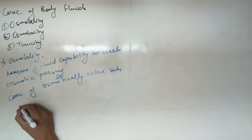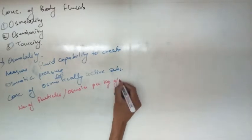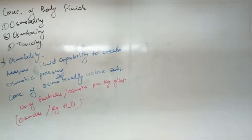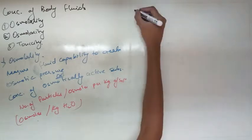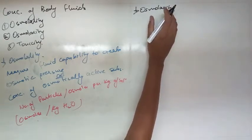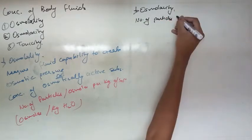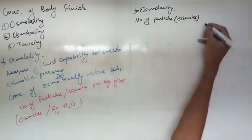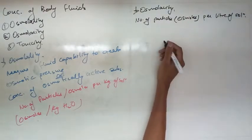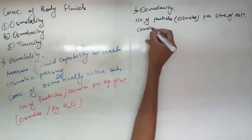Osmolarity is another term used to express osmotic concentration. It is the number of particles or osmoles per litre of solution — it is easier to understand than osmolality. Think of it like molarity, while osmolality is like molality. The unit is osmoles per litre.